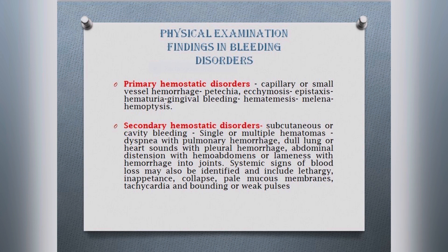In secondary hemostatic disorders, what we get is a huge accumulation of blood. As an example of a secondary hemostatic disorder, we will discuss rodenticide poisoning, viper bite, or poisoning with brodifacoum. There is a huge accumulation of blood — hematomas, hemoabdomens, blood in the pleural cavity which can cause dyspnea. The signs and symptoms of primary and secondary hemostatic disorders can be really variable.